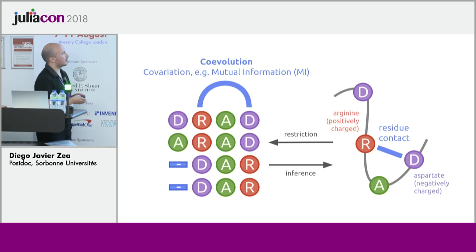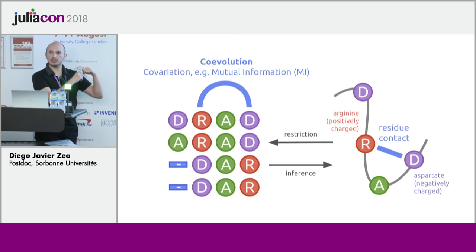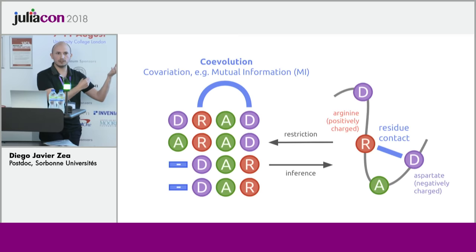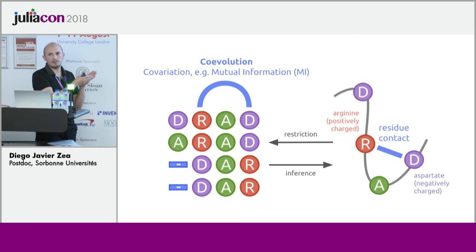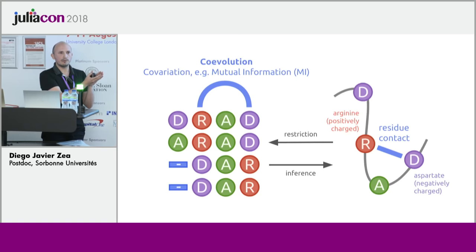For example, here in this schematic representation, we have two positions that are coevolving because in the structure they have interaction between a positive and a negative residue. So if I change one, I need to change the other one also to maintain the interaction. This is a simple example of coevolution, and we use covariation in the multiple sequence alignment as a way to see this coevolution signal.